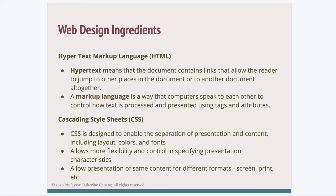HTML has two parts. It has the hypertext portion, which means each document can contain links to other websites. Thinking about data structures, it can be like a linked list where one page links to the next, or more like a tree where a home page links to a few different pages and then sub-pages. Or you could have a graph where child nodes link back to the home page or to siblings. Hypertext refers to the linking nature of different documents on a site, including links that jump to different sections on the same page.